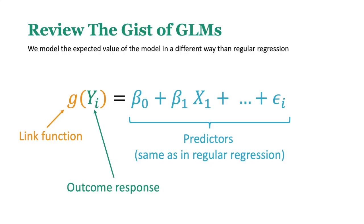First, let's review the gist of GLM. We are modeling the expected value of our outcome in a slightly different way. What we're doing is essentially wrapping the predicted outcome in a link function that changes a distribution that is tougher to work with to something that's a lot easier for regression to work with.